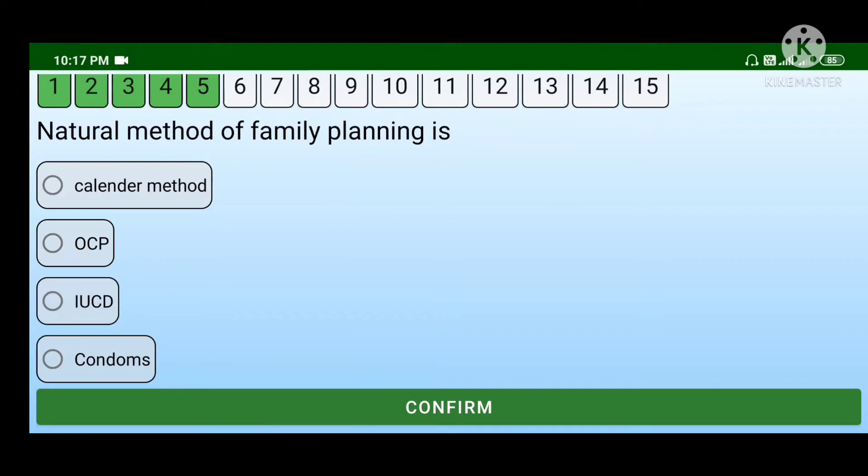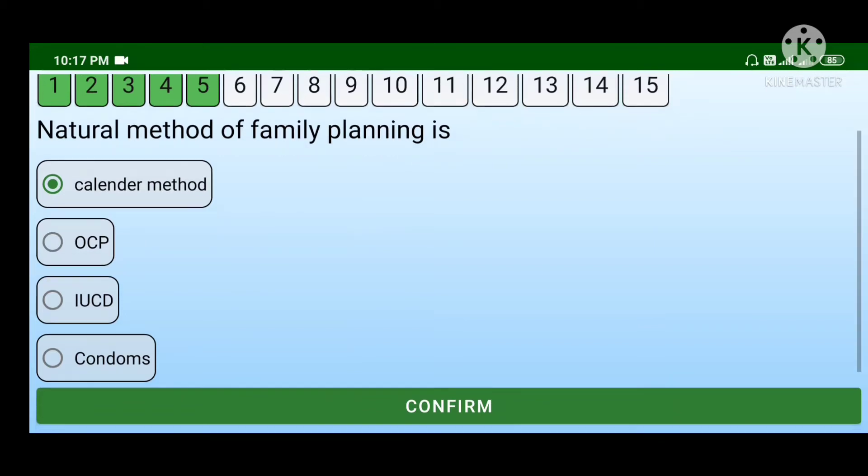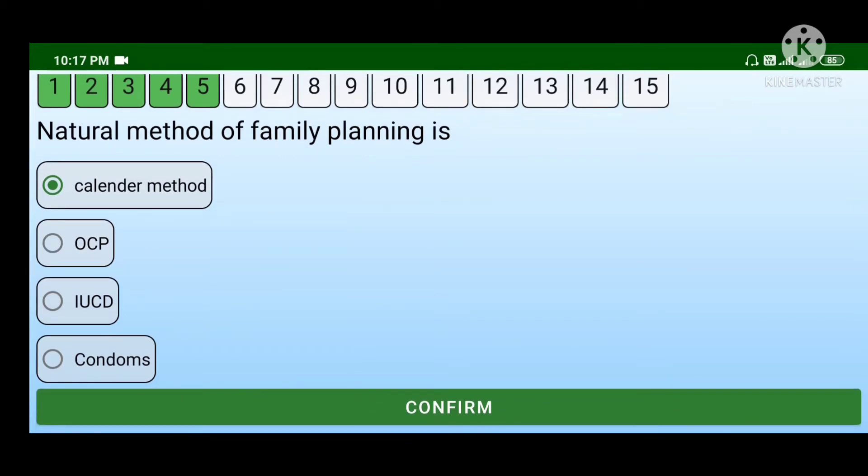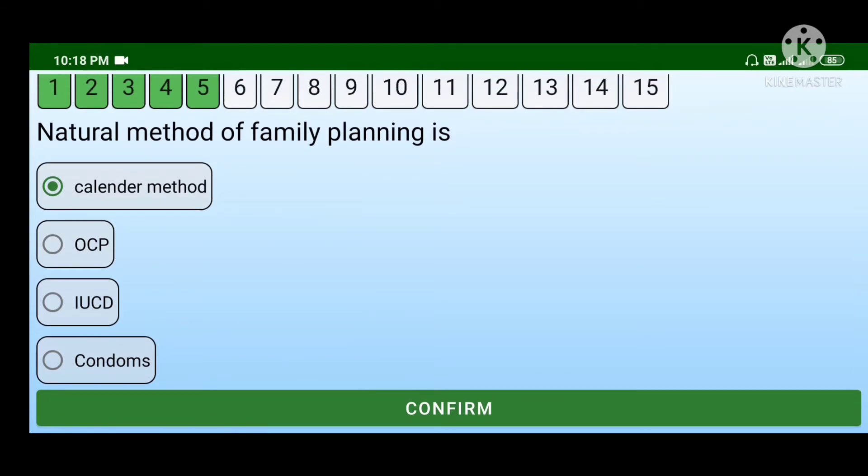Natural method of family planning is calendar method, OCP meaning oral contraceptive pill, IUCD intrauterine contraceptive device, or condoms. The answer is calendar method. In calendar method, nothing is used; planning is done by just looking at the calendar, so it's completely natural.